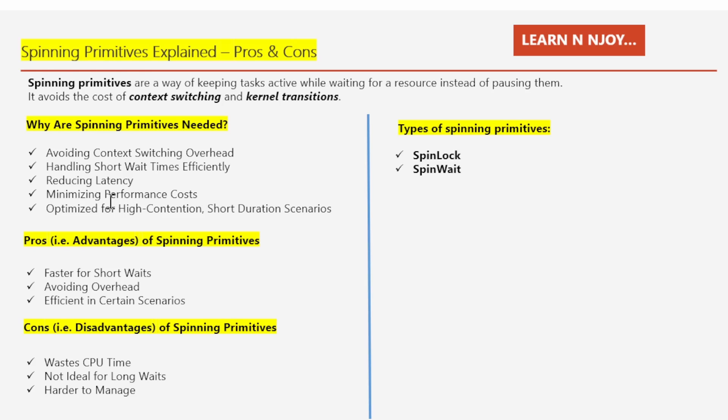The fourth reason is minimizing performance cost. Spinning primitives are useful when tasks require quick, low-cost synchronization, as they minimize the performance overhead associated with managing thread state. The fifth reason is optimizing for high-contention, short-duration scenarios. When multiple tasks frequently need to access a shared resource and the lock will be held for a very short time, spinning can be more efficient.